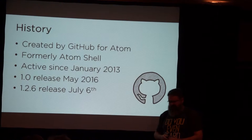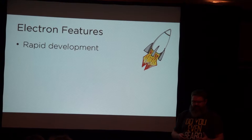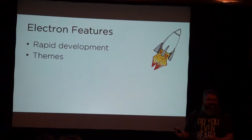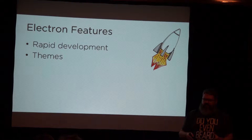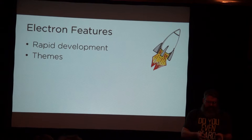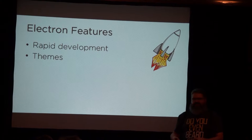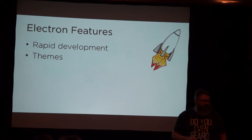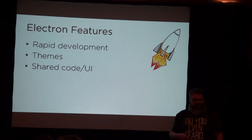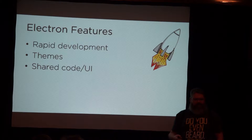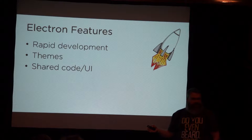Some features of Electron include rapid development and the ability to do themes. Since it is CSS, you can easily support different themes in your application — light or dark, customizable themes, or even make it easy to rebrand your application. If you've got an application created for a particular client, you can easily swap out the CSS and some images and create the same application for somewhere else. Chances are if you have a web application, there's a lot of JavaScript code and CSS that you could leverage into an Electron app. As a first proof of concept, you might even just point your Electron application at your existing web app.